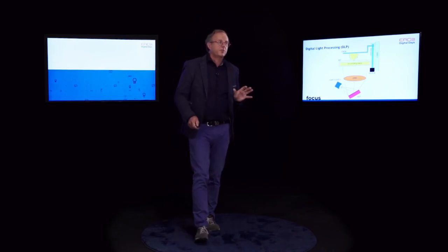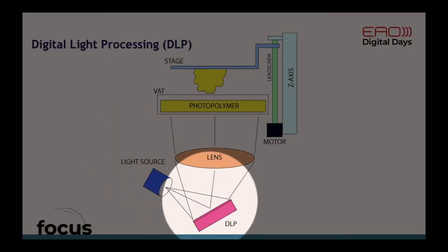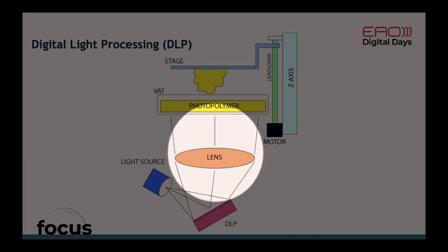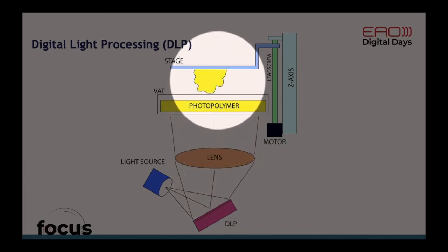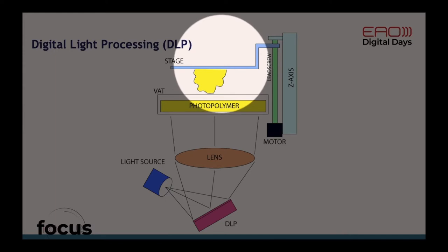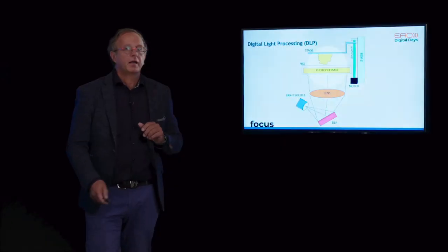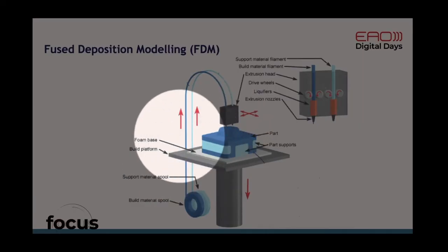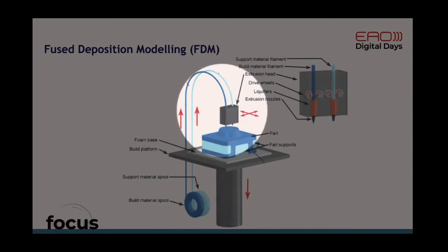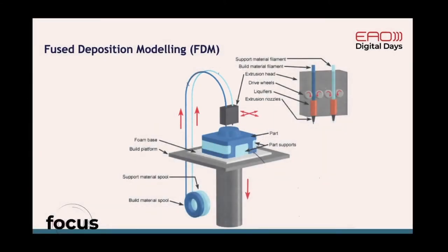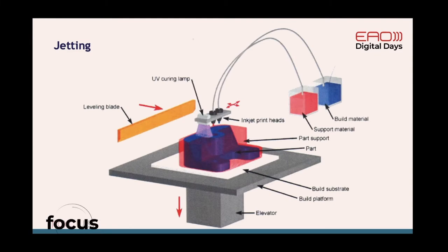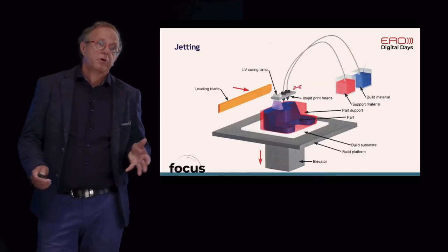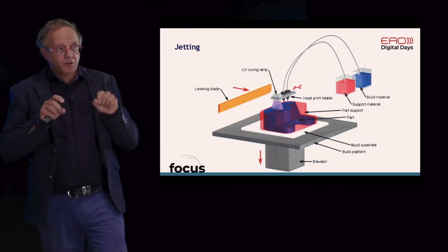In digital light processing, we have a light source that goes through a mirror and lens, ending up in a photopolymer bath. A lift takes the build platform out of the photopolymer bath as the object is printed layer by layer. In fused deposition modelling, a string of material is melted and deposited layer by layer onto the build platform. Jetting is comparable to a jet printer at home — it squirts different materials onto the building platform, which are cured layer by layer.